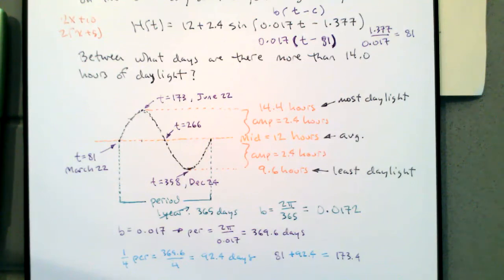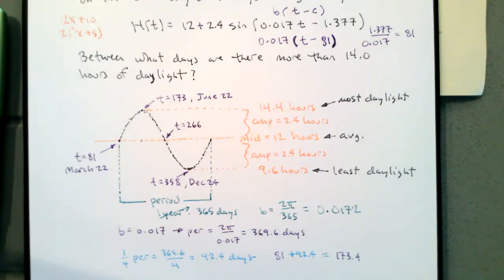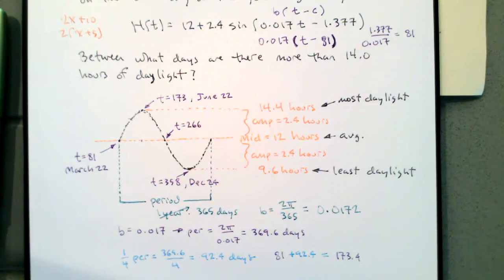This is just looking at the equation and what it tells us in context — making sure our intuition about the equation fits with what it's supposed to model. Application problems are better in some ways because the answer has to make sense in context. If you're calculating the length of a runway for a 747 and you get 15 feet, something has gone horribly wrong.